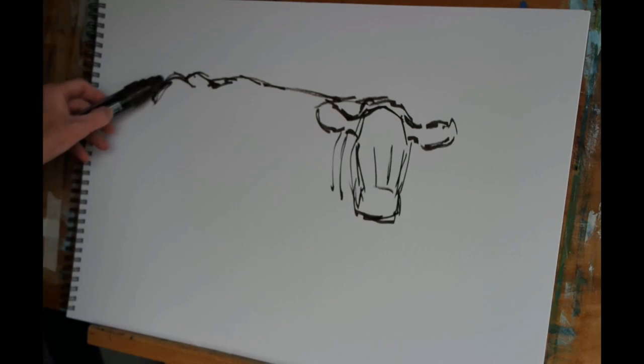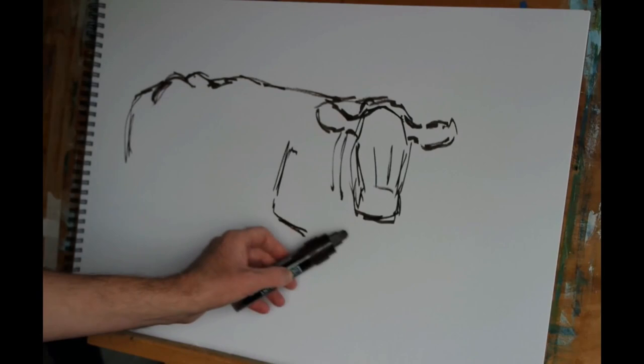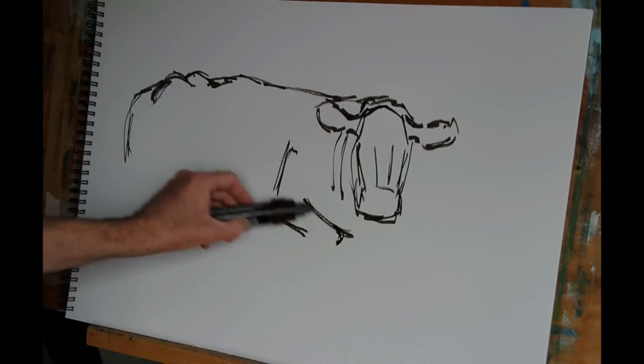The hip creates another lump in the back there, and then the foreleg. You can just see a suggestion of that elbow joint there, and then there's a fold in the flesh as the rest of the leg tucks under the body.